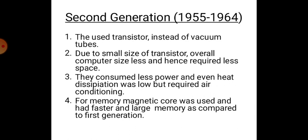Second Generation: 1955 to 1964. Second generation computers used transistors instead of vacuum tubes. Due to the small size of transistors, the overall computer size became less and required less space. Transistors were developed on semiconductor devices like silicon and germanium. These computers consumed less power and heat dissipation was low, but still required air conditioning. For memory, magnetic core was used, providing faster and larger memory compared to the first generation.